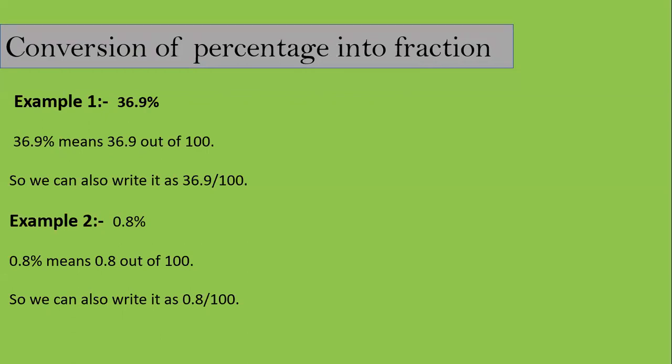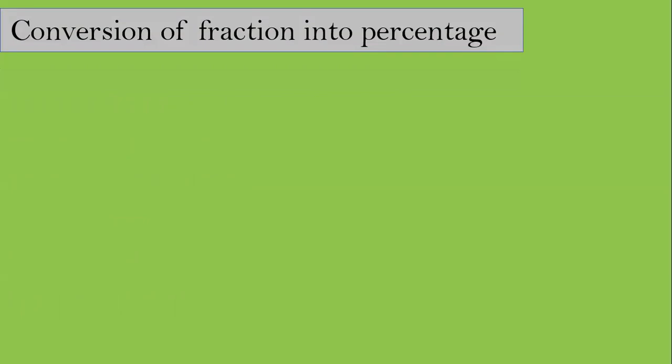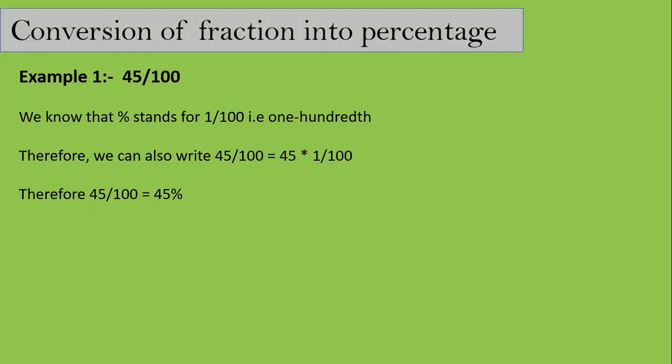What about converting a fraction into a percentage? If 45 by 100 is given, since the percent sign means 1 by 100, we can write 45 by 100 as 45 into 1 by 100, which gives us 45 percent. Similarly for 2.3 by 100 — you can pause the video and try it yourself. The answer is 2.3 percent.